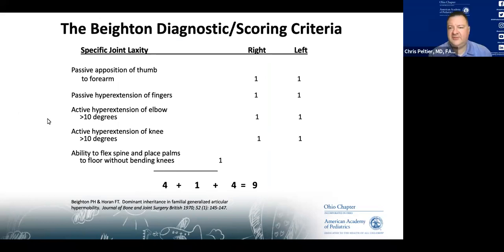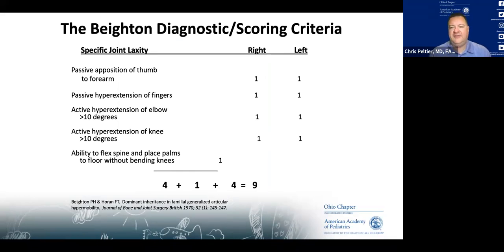Shannon, can I ask you a question about the Beighton score? When you're looking at both extremities — if you have hypermobility on the right, are you almost always going to have it on the left? Or is it common to have it on just one side?